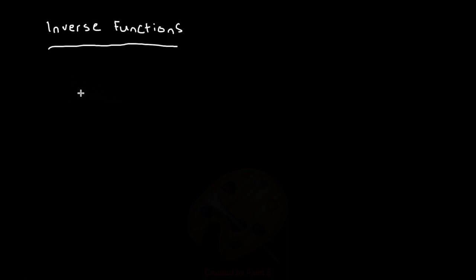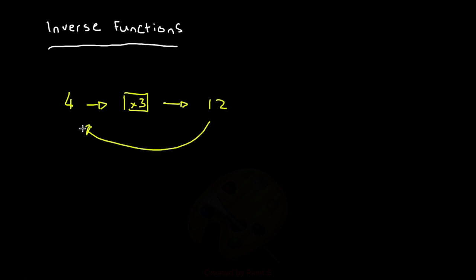Now let's look at special types of functions. First, we've got inverse functions. We know that a function takes an input and produces an output. An inverse function basically does the opposite — it describes how we get from our output back to our input. So if we have 4 as an input and put it inside a function that multiplies by 3, we get an output of 12. An inverse function asks: what do we need to do to get from our output, 12, back to our input, 4? And that would be to divide by 3. So our inverse function in this case would be to divide by 3.